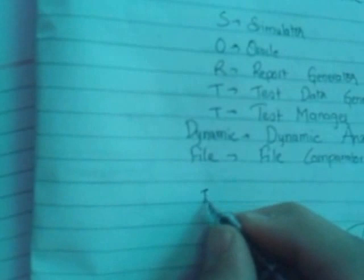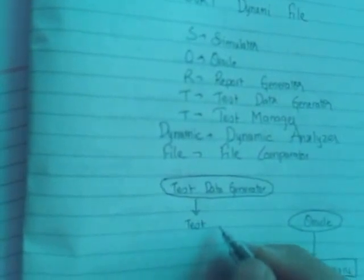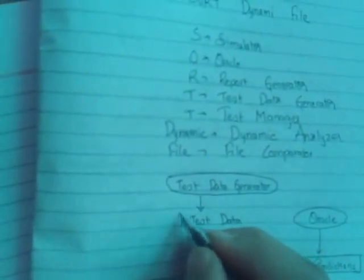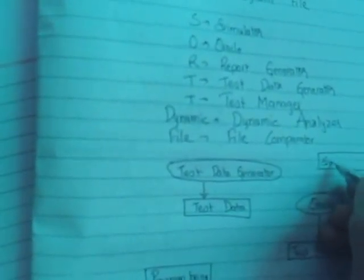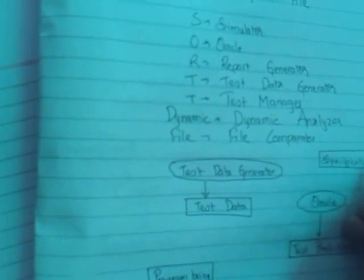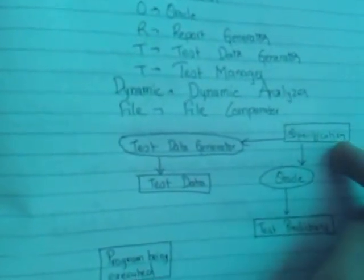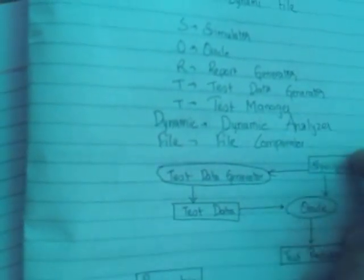The Test Data Generator generates test data. It is used to provide and generate data for testing based on specifications. The user requirement and system specification lead to the Test Data Generator producing the required test data rows.